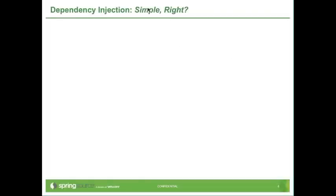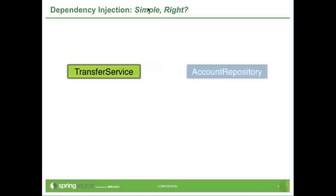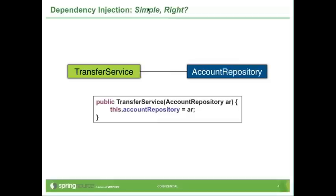Dependency injection — it's a very, very simple concept. Maybe even a revolutionarily simple concept when Spring first came around. If we have components in a Java application like a transfer service and it depends on another component — i.e. it interacts with another object at runtime, like an account repository or account DAO, some data access artifact — there's clearly a relationship between them. We would express that in Java like this: the transfer service constructor takes an account repository collaborator that gets injected as a dependency through the constructor. This really is as simple as dependency injection can be.